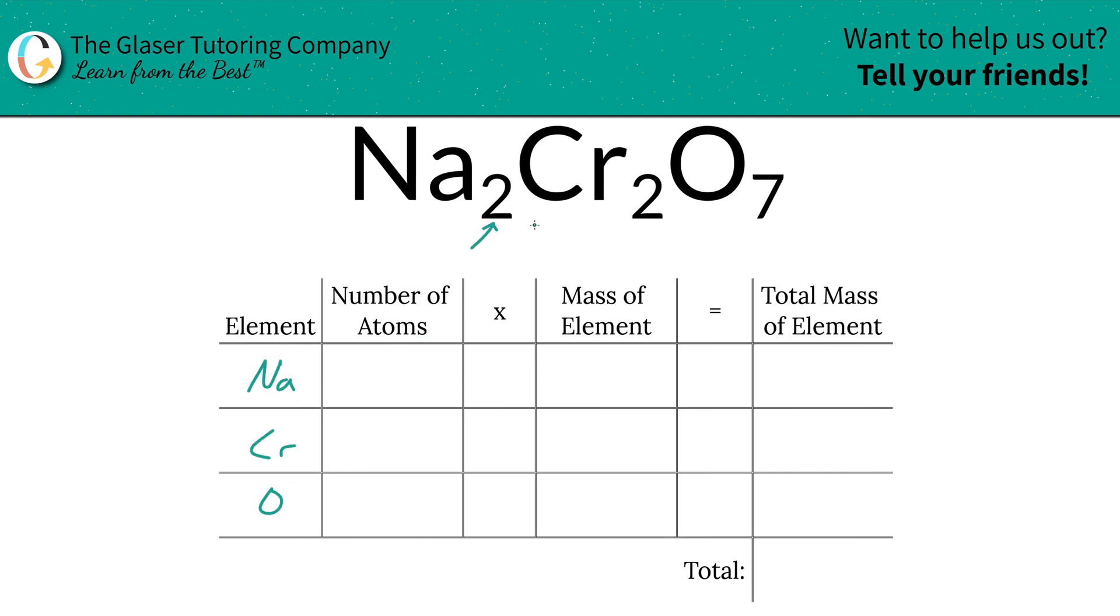Next is to write down the number of atoms of each, and that's where the subscripts come into play. So the subscript of sodium is a 2, that means there's 2 sodium, 2 chromium, and then therefore 7 oxygen.